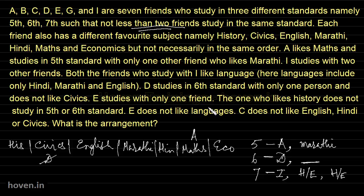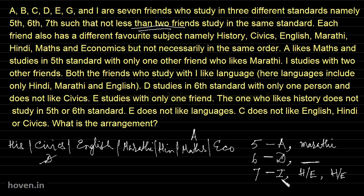E studies with only one friend. This means E is either in sixth or fifth standard. The one who likes history doesn't study in fifth or sixth — so the person who likes history studies in seventh standard. There are three persons in seventh: two of them like Hindi or English, and the third one I is left. So this means I should be a student of history. I will write I here at the top since it is finalized.